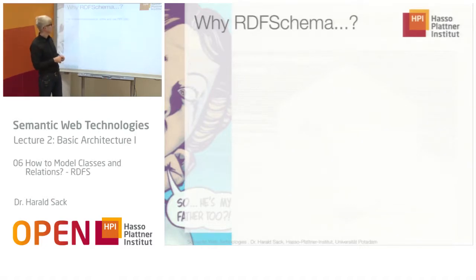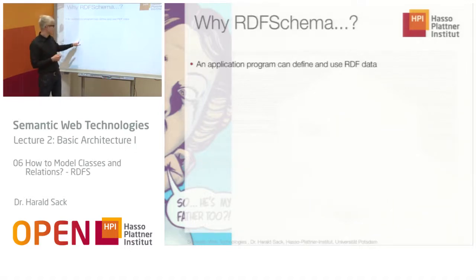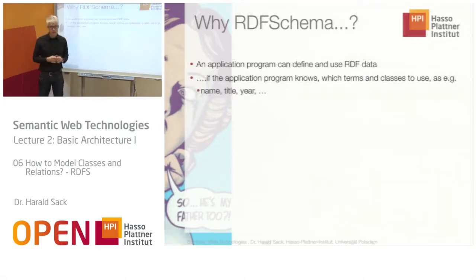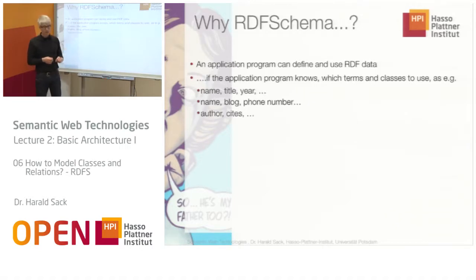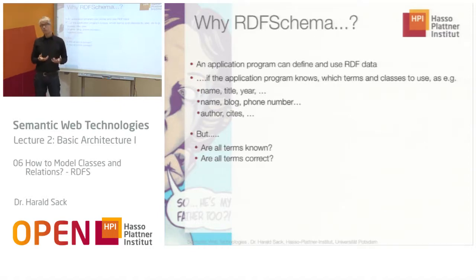So what is RDF schema and why do we use it? Just imagine we have an application program, and within this application program we might access and define RDF data. But we can only do this if the application program knows which terms and classes to use — for example, if there is a name, a title, a year, a phone number, an author, or some citation. The problem is: do I know all the terms in advance, or is there some way to look them up? Are all the terms used in the program really correct? This is, of course, really a problem.